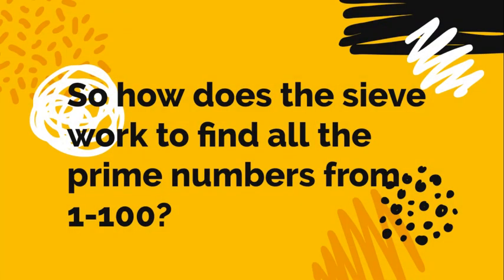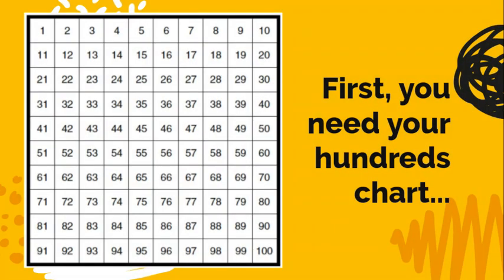So how does the sieve work to find all the prime numbers from 1 to 100? What you're going to need is your hundreds chart. So grab that and then grab like five or six colors, as many different colored pencils or things as you can. You can do this with just a pencil, but it ends up looking cooler with colors. So take a second, pause if you need to, and grab what you need.